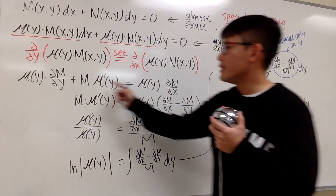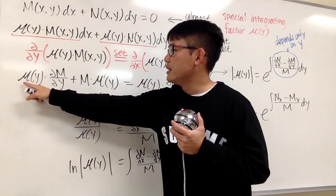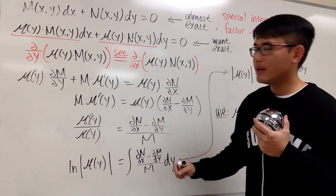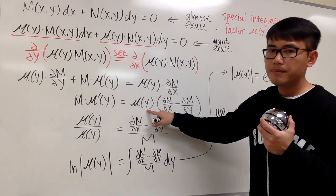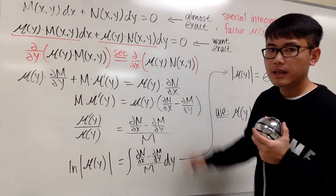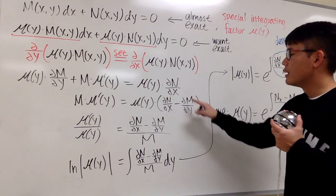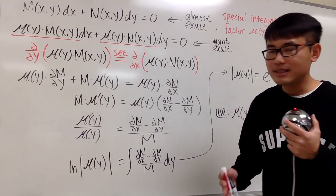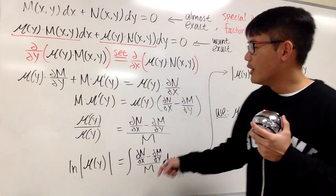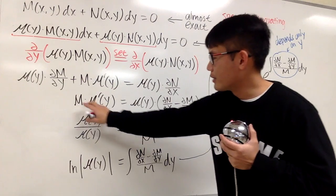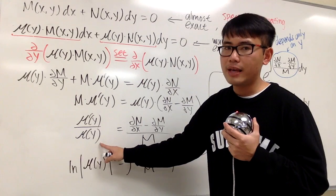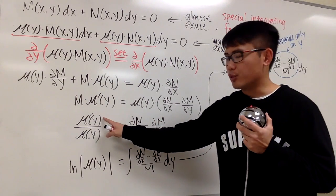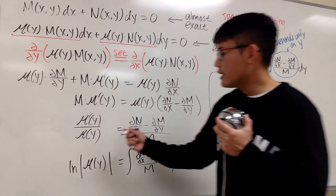As we can see from this equation, we have mu of y on both sides. Let me bring one term to the right-hand side and factor out mu of y. So we have mu of y times the quantity: partial n with respect to x minus partial m with respect to y. Then I divide both sides by the original mu, giving mu prime of y over mu of y. And I also divide both sides by m, so we have that expression on the right.